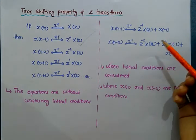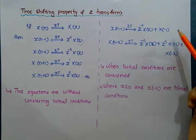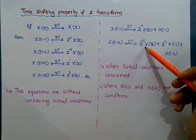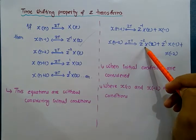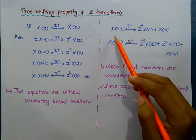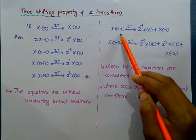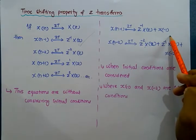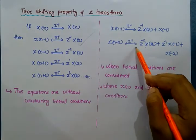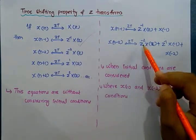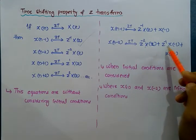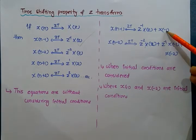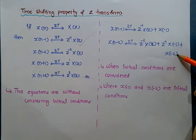If we consider the initial conditions, then the equations will be changed. The Z-transform of x(n minus 1) becomes z-inverse times X(z) plus x(minus 1). And the Z-transform of x(n minus 2) becomes z-inverse squared times X(z) plus z-inverse times x(minus 1) plus x(minus 2). Here, x(minus 1) and x(minus 2) are the initial conditions.